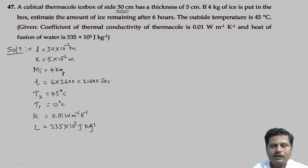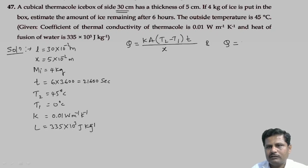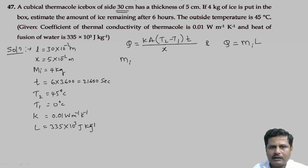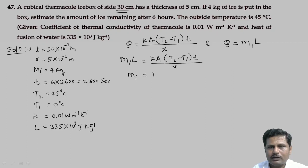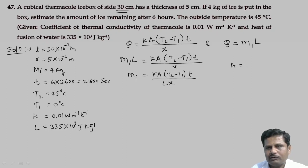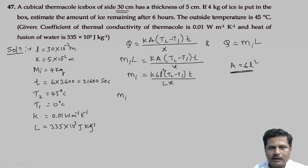From the law of thermal conductivity, Q equals k A (T2 minus T1) t divided by x. The heat energy absorbed also equals mass of ice melted into latent heat. So mass melted equals k A (T2 minus T1) t divided by (L times x). A cube has 6 surfaces, so area A equals 6 L squared.